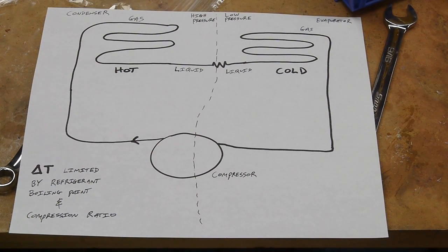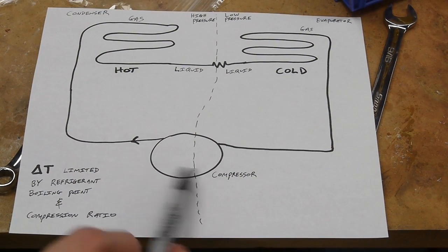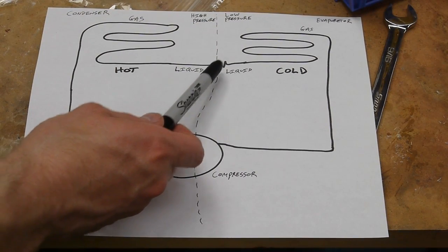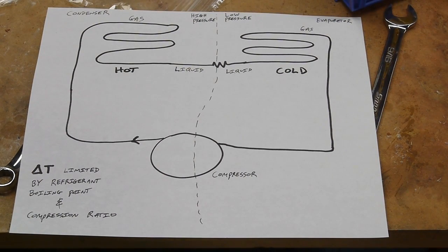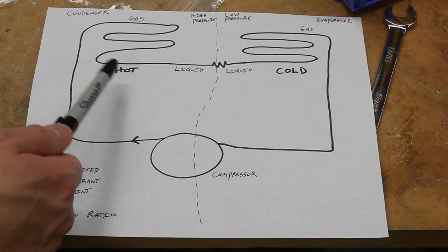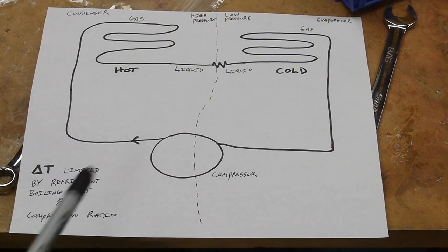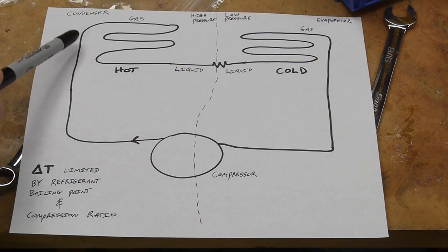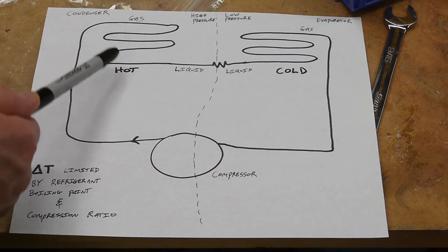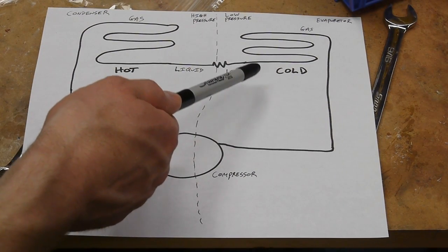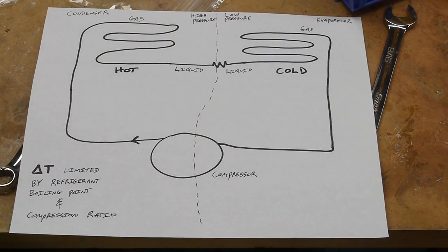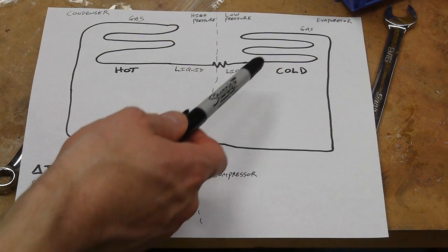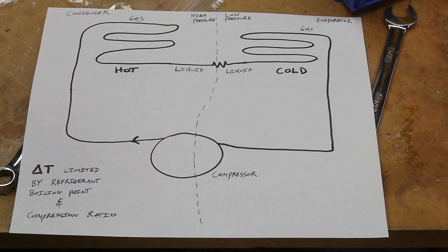In a basic phase change refrigeration system we have a high pressure side and a low pressure side divided by the compressor itself and a restriction, which is very often a capillary tube. The compressor raises the pressure and when we extract heat from that compressed gas it condenses to a liquid which gets sent over to the cold side of the system. Since the pressure is lower over here, that liquid will now evaporate, turn back to a gas, and complete the cycle. So we get a large amount of heat moved and we're making use of that phase change point in the refrigerant.